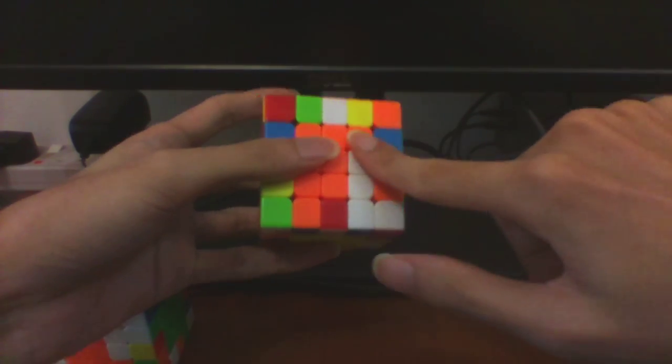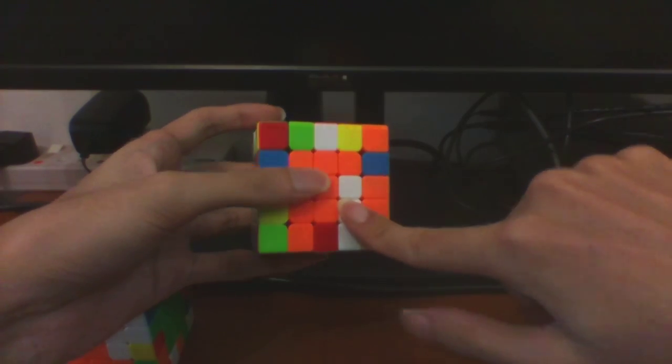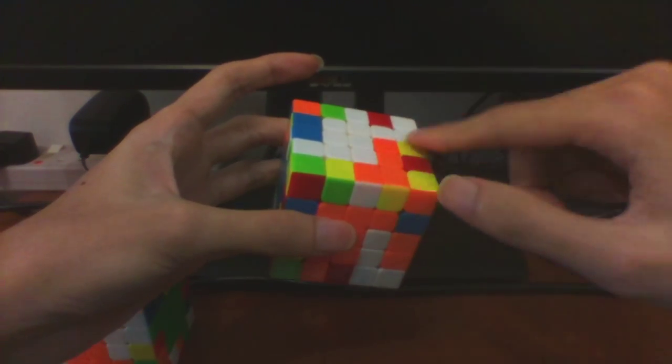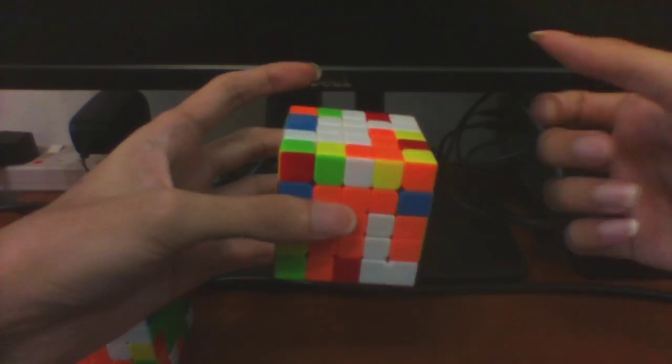For both of these cases, we bring down this X center to the bottom first, and after that we can join it up with this partial bar and insert it in 3 moves.